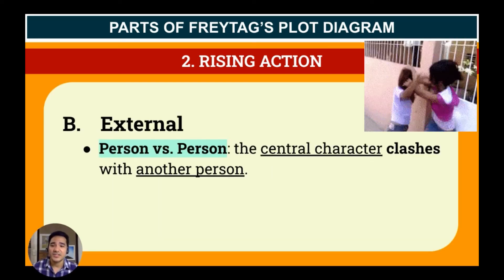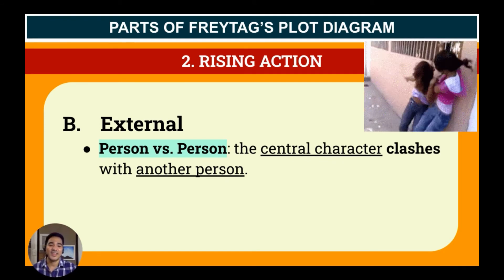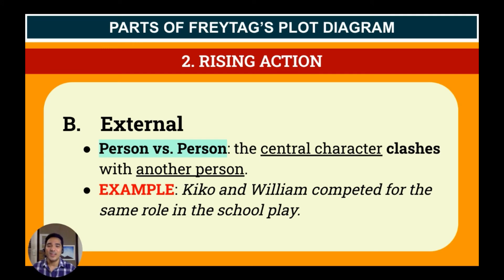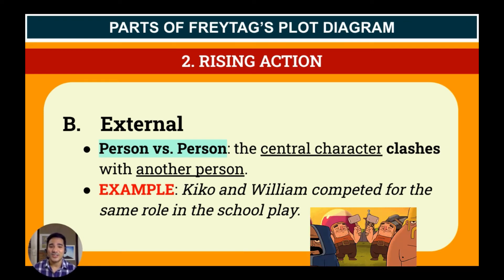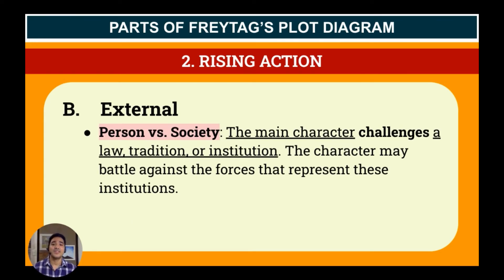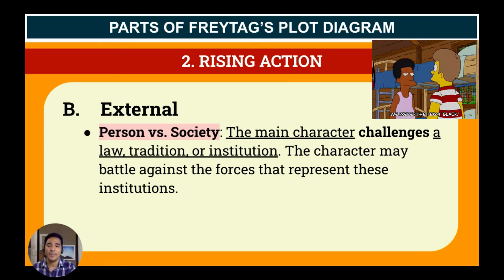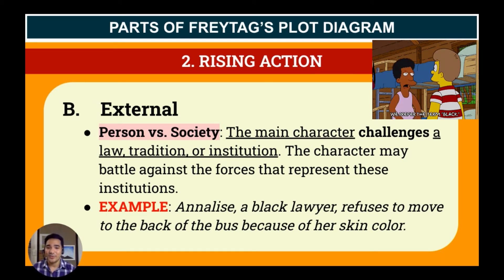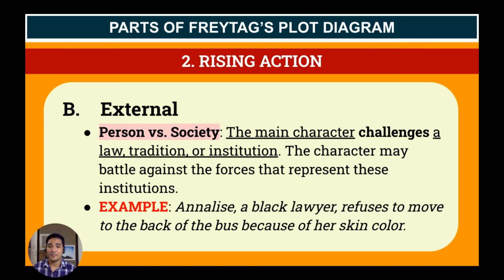Under external, the character struggles against some outside force. We have person versus person, where the central character clashes with another character. For example, Kiko and William competed for the same role in the school play — the two characters clash with each other. We also have person versus society, where the main character challenges a law, tradition, or institution. For example, Annalise, a Black lawyer, refuses to move to the back of the bus because of her skin color — she tries to challenge a social issue, which is discrimination.